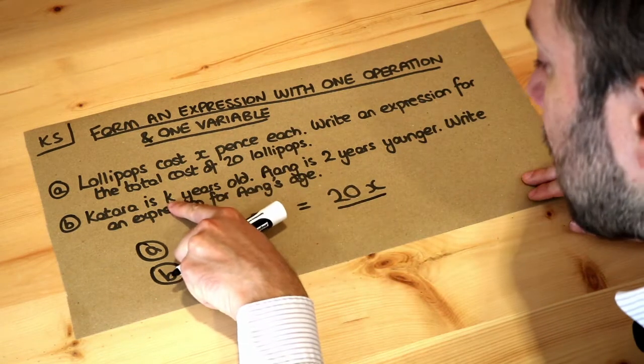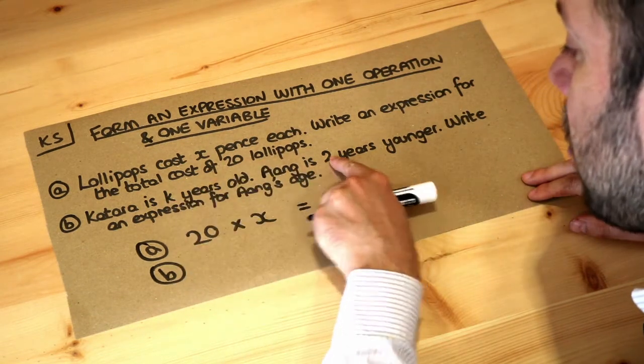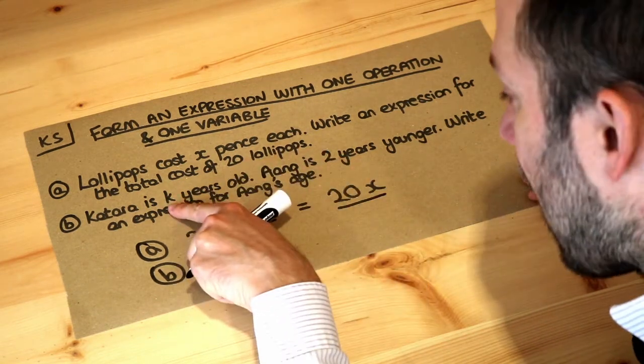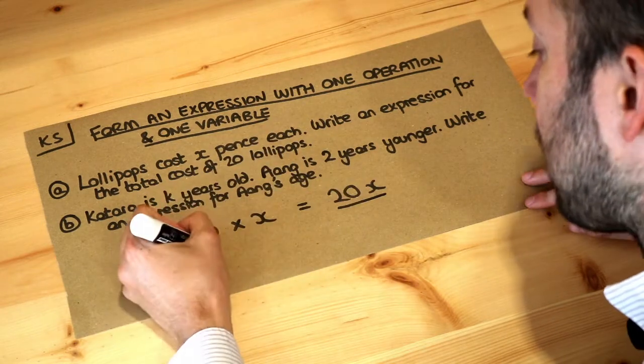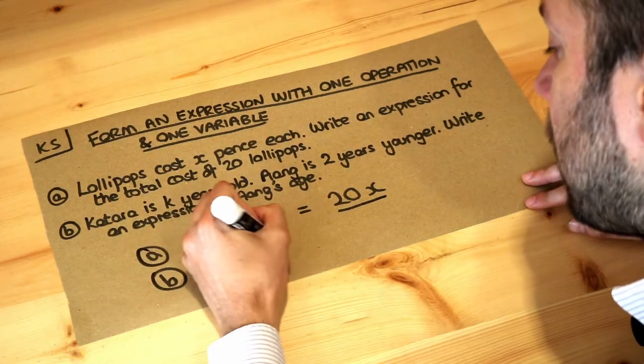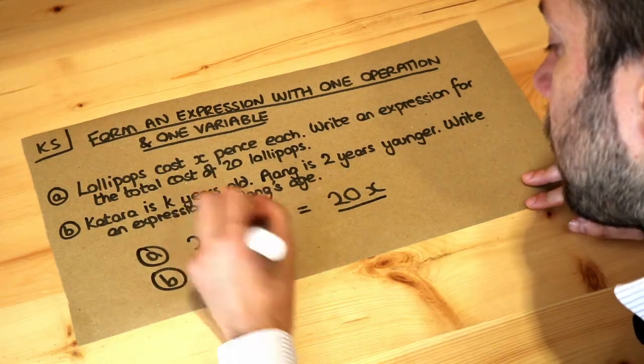So it's no different here. We would do Katara's age minus 2, which gives us k minus 2. And that's the answer: k minus 2.